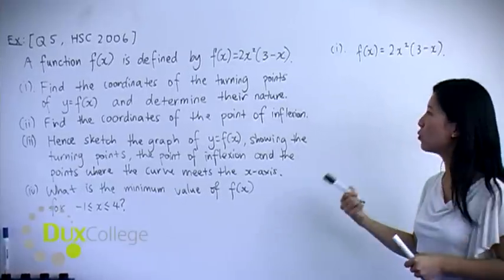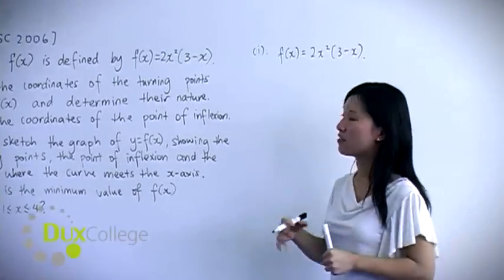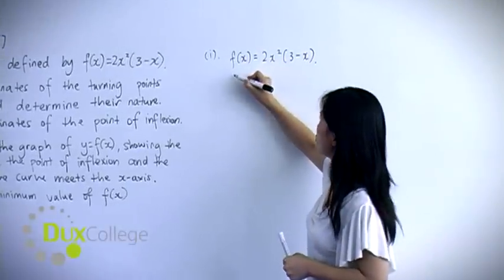Now to find the coordinates of the turning point, the first thing you need to do is find the first derivative of the function. So you need to differentiate.